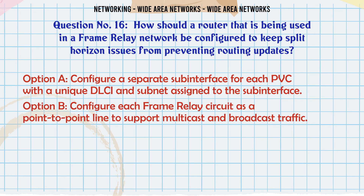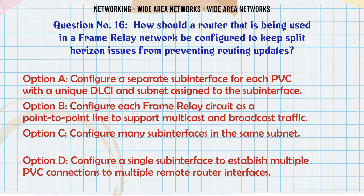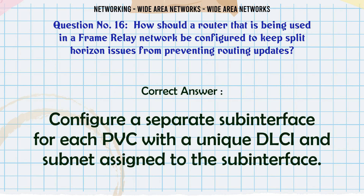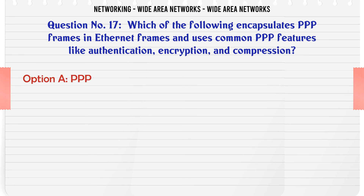In a frame relay network configured to keep split horizon issues from preventing routing updates, which approach is correct? A. Configure a separate subinterface for each PVC with a unique DLCI and subnet assigned to the subinterface. B. Configure each frame relay circuit as a point-to-point line to support multicast and broadcast traffic. C. Configure many subinterfaces in the same subnet. D. Configure a single subinterface to establish multiple PVC connections to multiple remote router interfaces. The correct answer is A: Configure a separate subinterface for each PVC with a unique DLCI and subnet assigned to the subinterface.